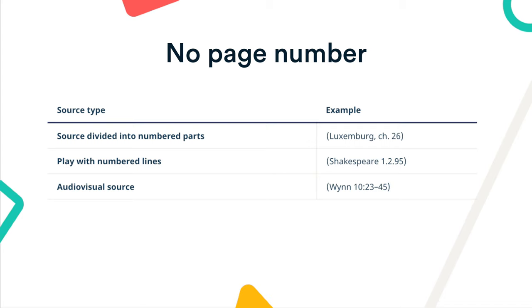If a source does not have page numbers but is divided into numbered parts — for example, chapters, scenes, or times — use these numbers to locate the relevant passage. If the source does not use any numbering system, include only the author's name in the in-text citation. Don't include paragraph numbers unless they're explicitly numbered in the source.